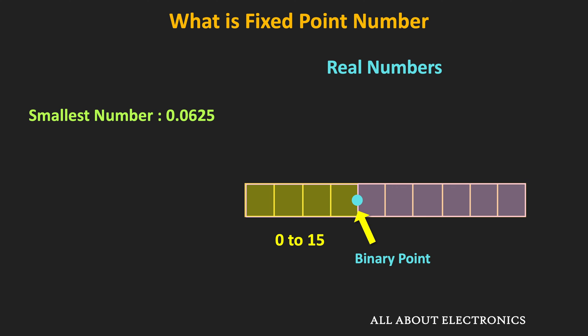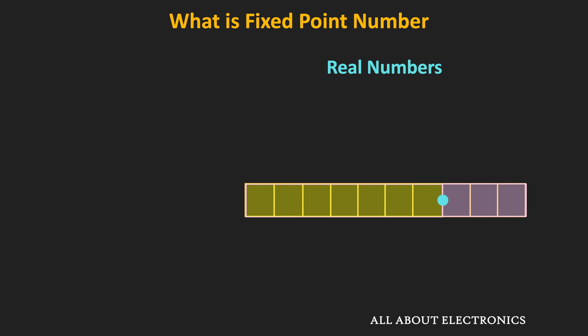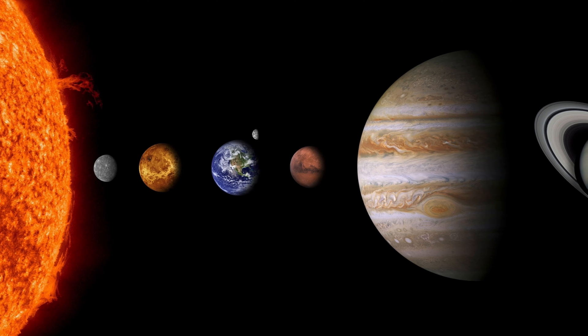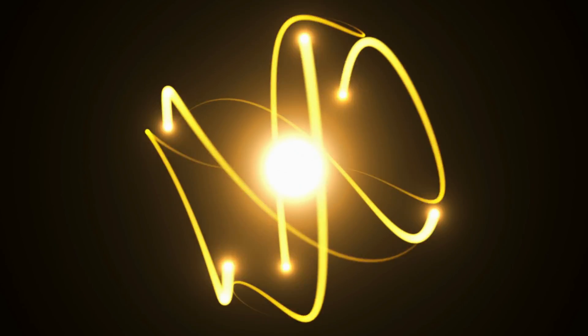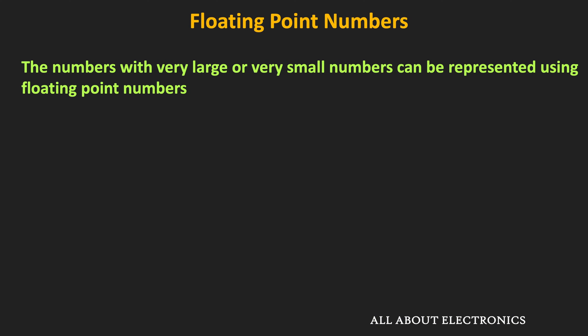But in floating point representation, it is possible to change the location of the radix point or binary point dynamically. For a given number of bits — say 10 bits — if we want more range, we can shift the binary point towards the right. Or if some application requires more precision, it is possible to shift the radix point towards the left. That means using floating point representation, it is possible to represent very large numbers like the distance between planets or the mass of planets, and very small numbers like the mass of the atom. This floating point representation provides both good range and good precision.